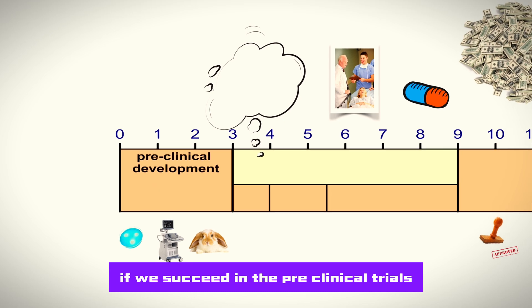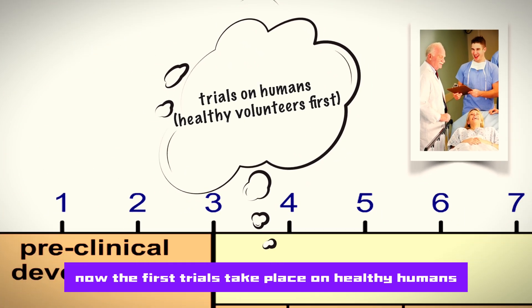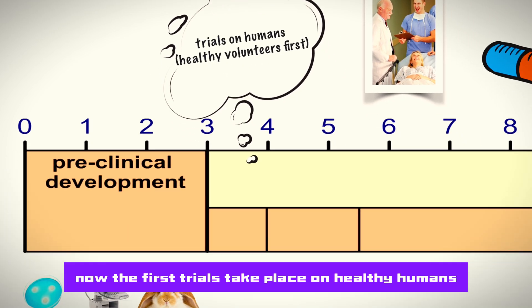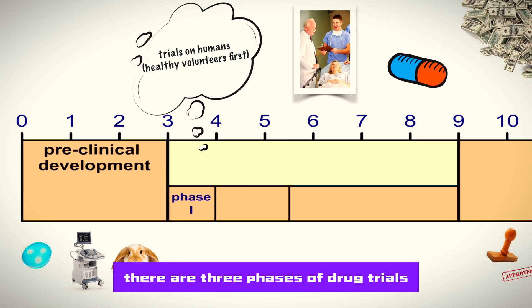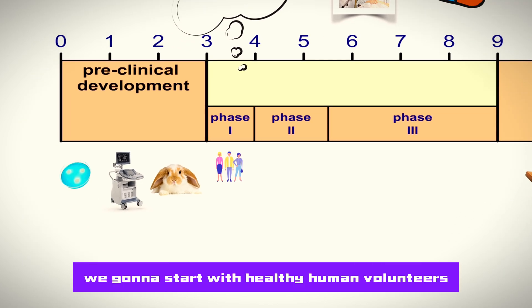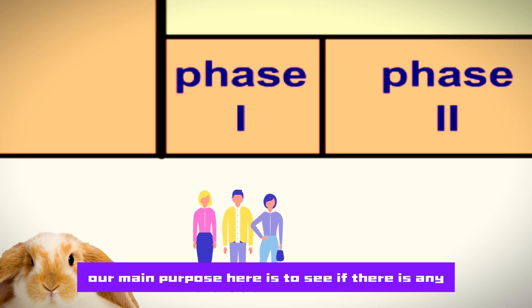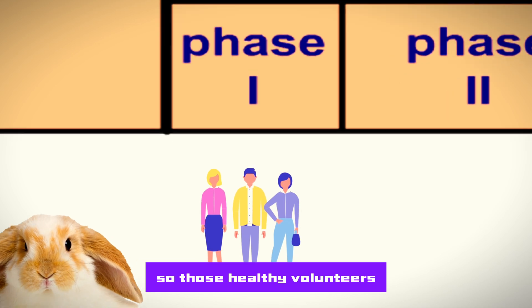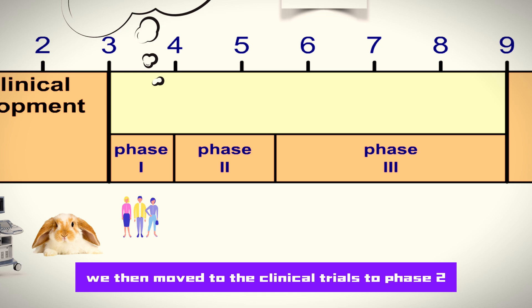If we succeed in the preclinical trials, we start human trials. The first trials take place on healthy humans, and that's what we call phase one of drug trials. There are three phases of drug trials: phase one, phase two, and phase three. In phase one, we're going to start with healthy human volunteers. Our main purpose here is to see if there are any major side effects, so those healthy volunteers are given a low dose of the medicine.